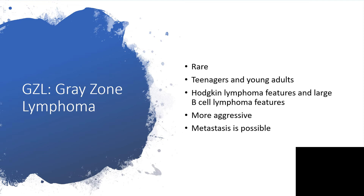Gray zone lymphoma is very rare and common among teenagers and young adults. Features of Hodgkin lymphoma and large B-cell lymphoma are both present, so it exists in a gray zone — a midpoint. It is more aggressive and metastasis is possible.